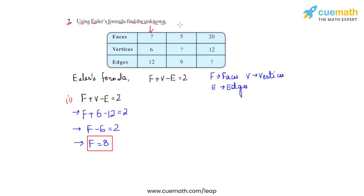Let us now consider the second column, where the number of faces and the number of edges are given. Let us again take Euler's formula and substitute the values given according to the second column.